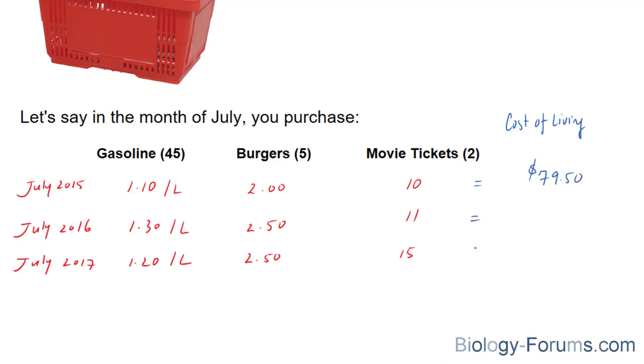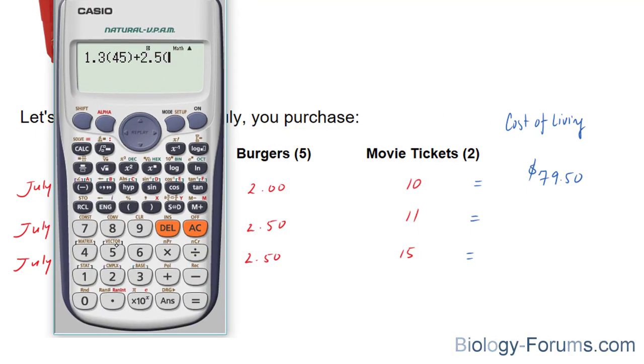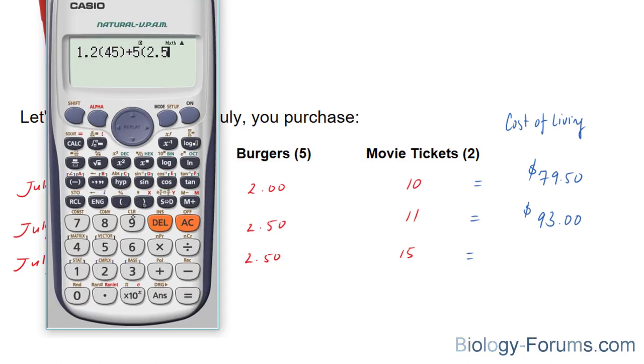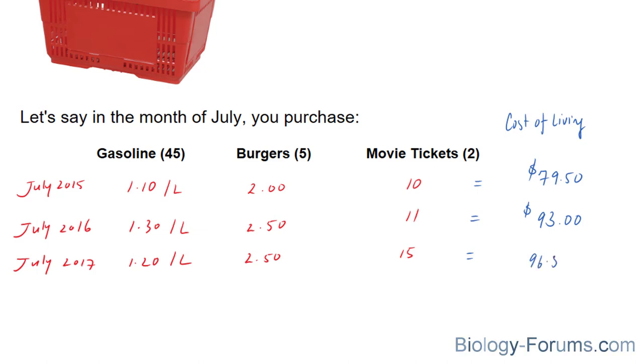And we're going to do the same thing for the other two rows. And lastly, $15 per every ticket that you purchased. And the cost of living for 2017 in July was $96.50.